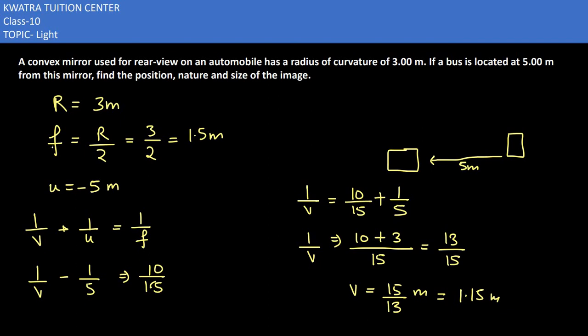Which formula should we use? It will be m = -v/u. The minus sign... v's value is 1.15 and u's value is minus 5. So minus divided by minus becomes positive, and the value comes out to 0.23 as the magnification.